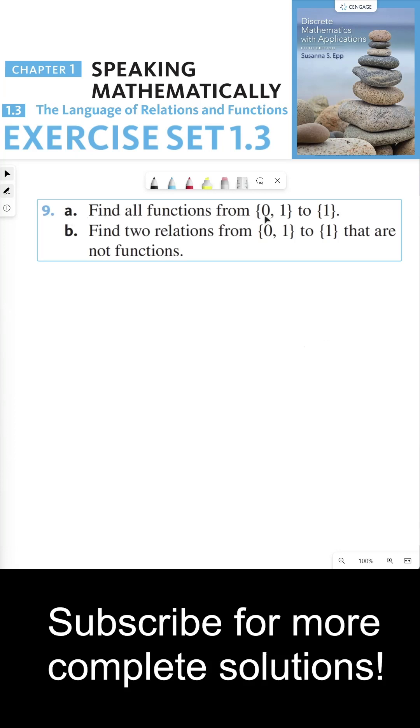It says, find all the functions from the set containing 0, 1 to the set containing 1. Here I wrote down my domain and my codomain as two bubbles.